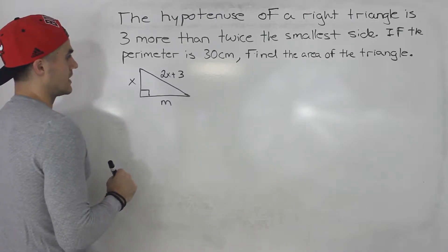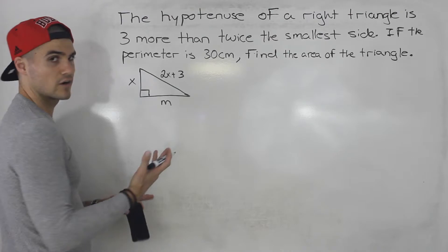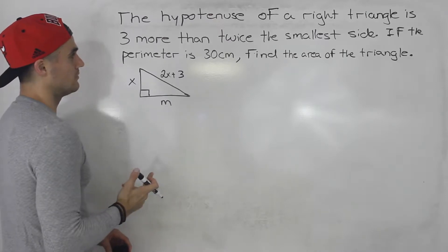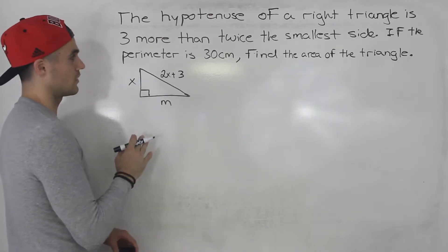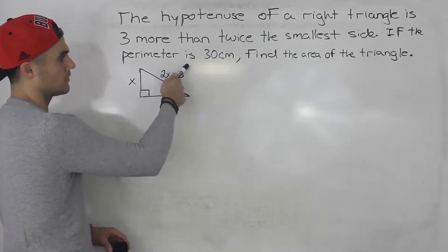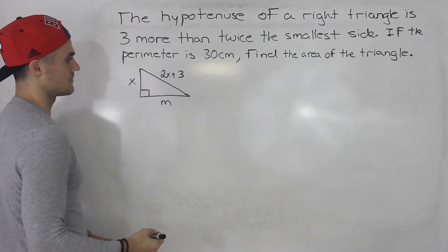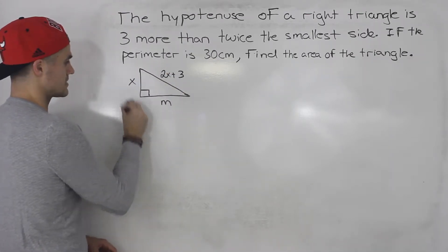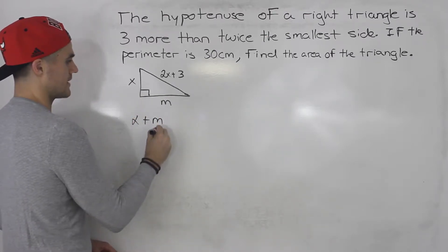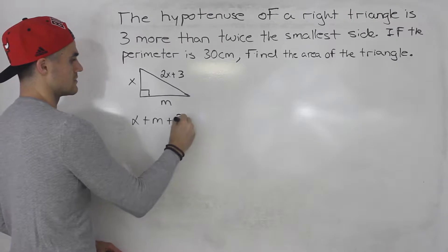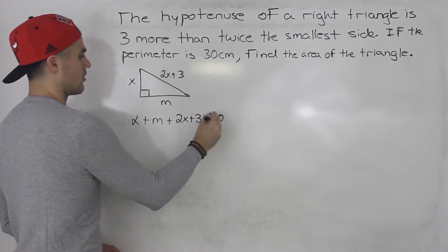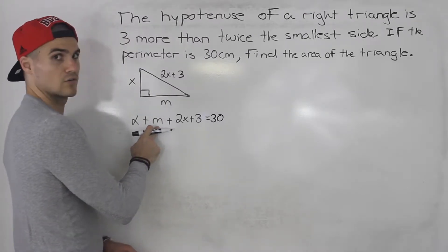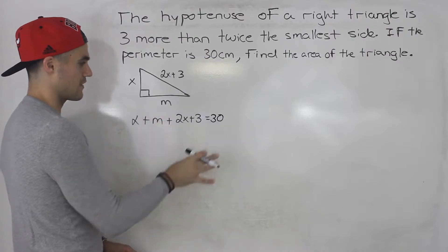The problem is we have two variables now — x and m. It's nice if we can get everything in terms of one variable. And we actually can, because we're told the perimeter of this triangle is 30 centimeters. That means all the sides added together has to equal 30. So x plus m plus the hypotenuse has to equal 30. We can isolate for m, and then we'll have everything in terms of x.